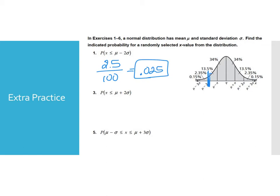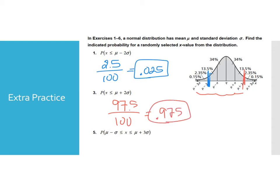Number three asks for the probability that a data value is less than or equal to the mean plus two standard deviations. The mean plus two standard deviations is marked on the curve, and you want everything less than that. You can add 13.5 + 34 + 34 + 13.5 + 2.35 + 0.15, or just do 100% minus 2.5%, which gives 97.5%. So 97.5 over 100 equals 0.975.